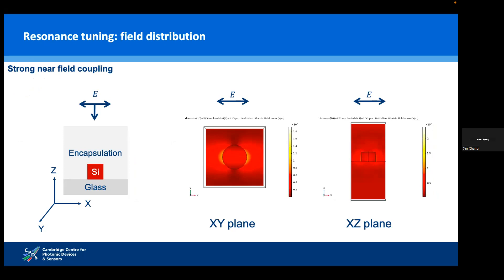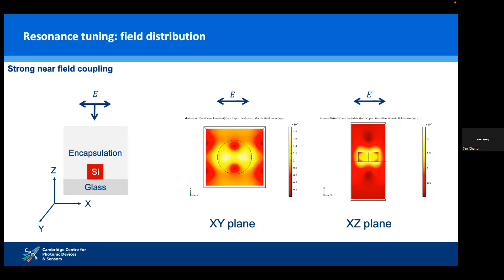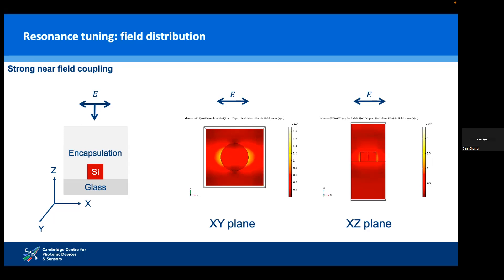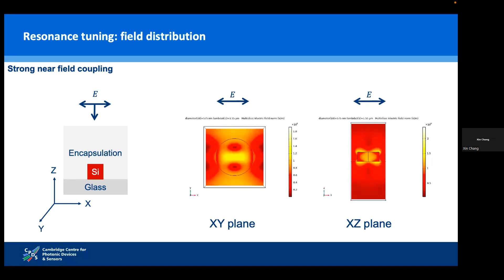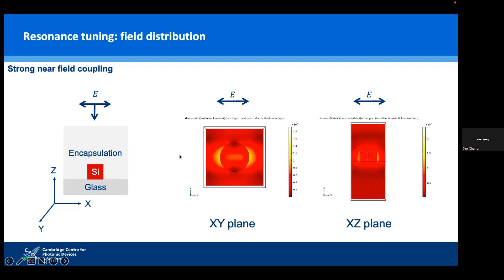There is near-field coupling between meta-atoms due to the nature of the Huygens metasurface — this is inevitable. That is exactly why it's not ideal for beam steering applications requiring very large angles. But it works in this case because we don't need that large a steering angle. Ideally, as part of future work, we'll use a different type of metasurface to ensure efficiency close to unity even for very large steering angles. The near-field coupling is quite strong because the field intensity outside the meta-atom is very strong.